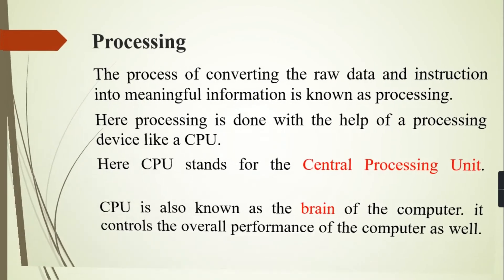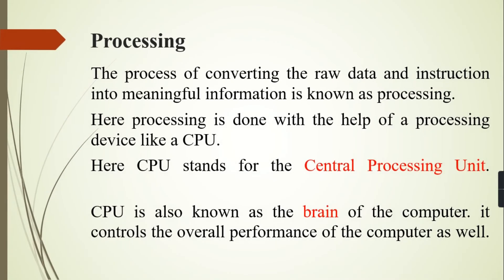Now the next topic is processing. The process of converting raw data and instructions into meaningful information is known as processing. Processing is done with the help of a processing device like a CPU, which stands for Central Processing Unit. CPU is also known as the brain of the computer, and it controls the overall performance of the computer.